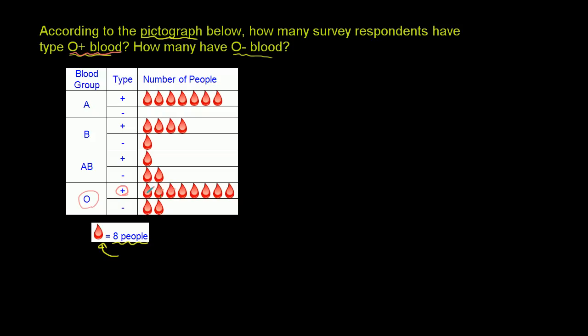We have one, two, three, four, five, six, seven, eight. So we have eight drops. I'll put those in quotes because it's pictures of drops. And then the scale is eight people per drop, so eight drops times eight people per drop.